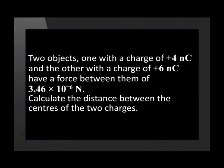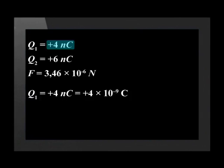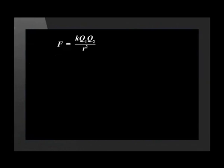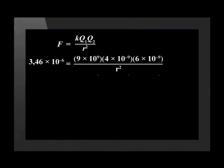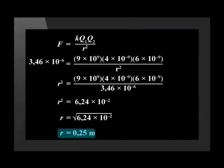In the next example, we need to rearrange the subject of the formula in order to find the distance between the two charged spheres. Two objects, one with a charge of positive 4 nanocoulombs and the other with a charge of positive 6 nanocoulombs, have a force between them of 3.46 times 10 to the negative 6 Newtons. Calculate the distance between the centers of the two charges. Q1 converts to 4 times 10 to the negative 9 Coulombs, and Q2 converts to 6 times 10 to the minus 9 Coulombs. After substituting the charges into the equation, we rearrange to get R squared as the subject of the formula, and R works out to be 0.25 meters.